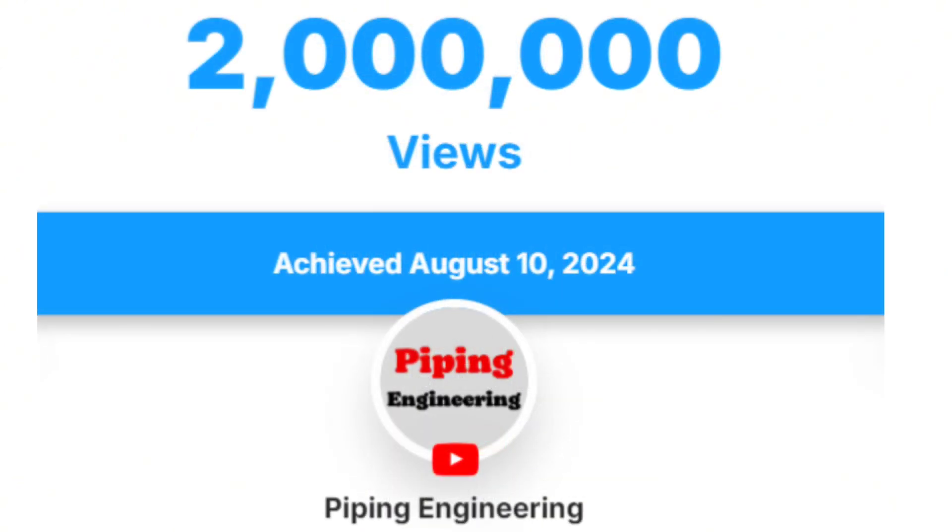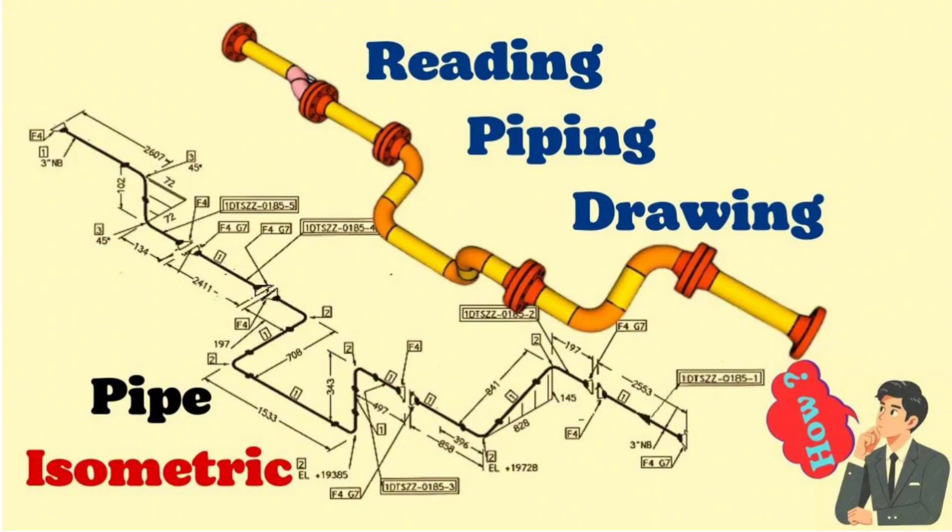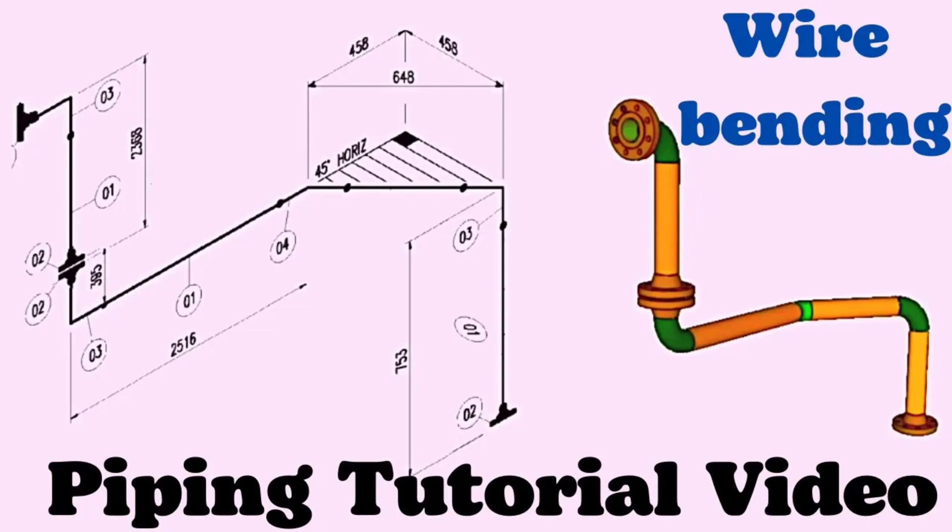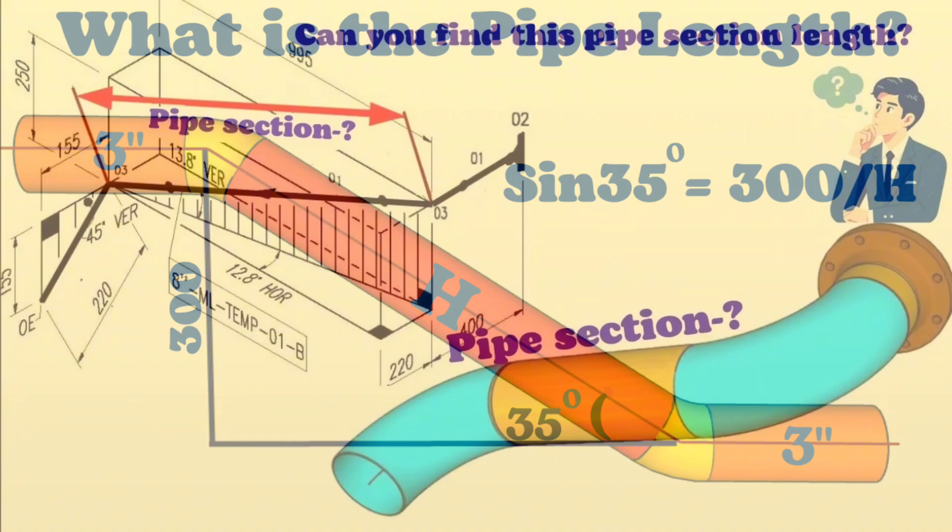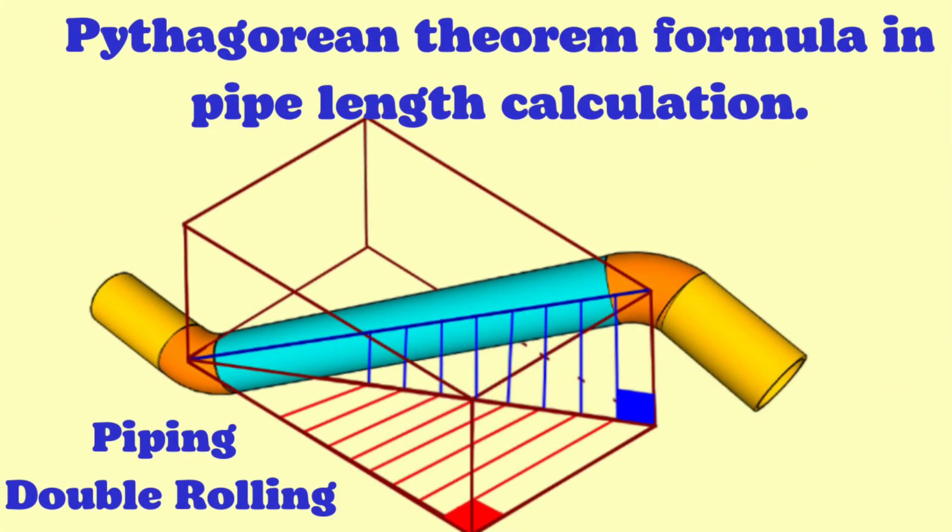In this channel we'll be showing you below topics. Piping Isometric Drawing, reading piping isometric drawings with easy method. How to learn pipe isometric drawing quickly. Piping tutorial, wire bending for isometric drawing. What is the pipe length? How to find the length of the pipe section. Pythagorean Theorem formula in pipe length calculation.